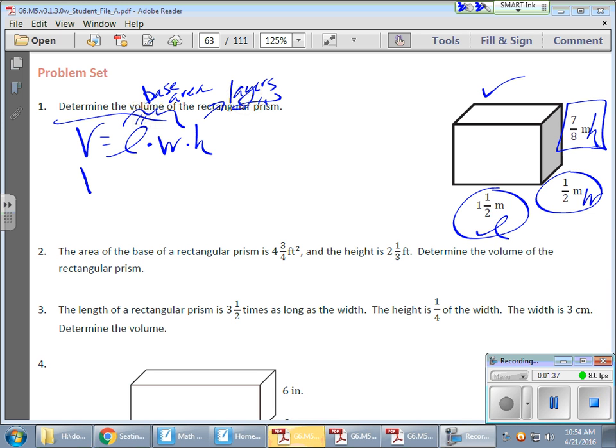So volume is going to equal 1 and 1/2. I'm going to write all these out. 1 and 1/2 times 7/8. So in order to multiply fractions, I'm going to turn everything into a fraction. So that 1 and 1/2, if I turn it into halves, gives me 3/2.